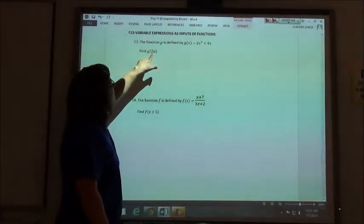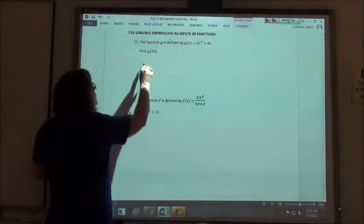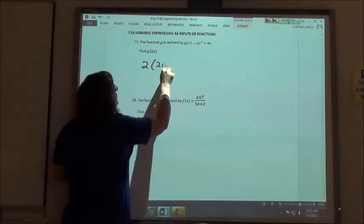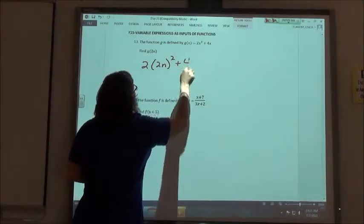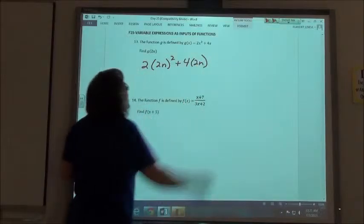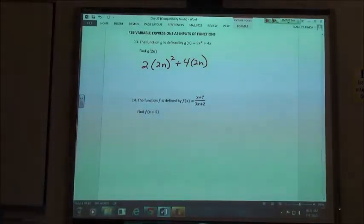So we are going to replace any of our x's with 2n. So we're going to do 2 times 2n squared plus 4 times 2n, and then we're going to simplify that as much as possible.